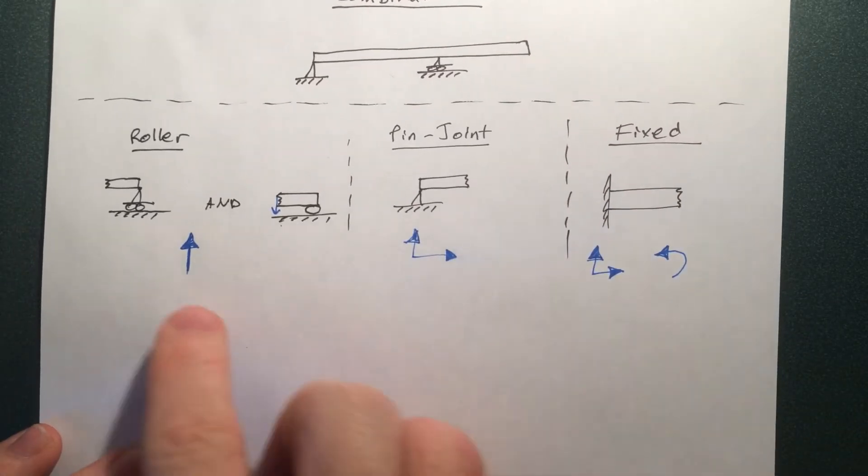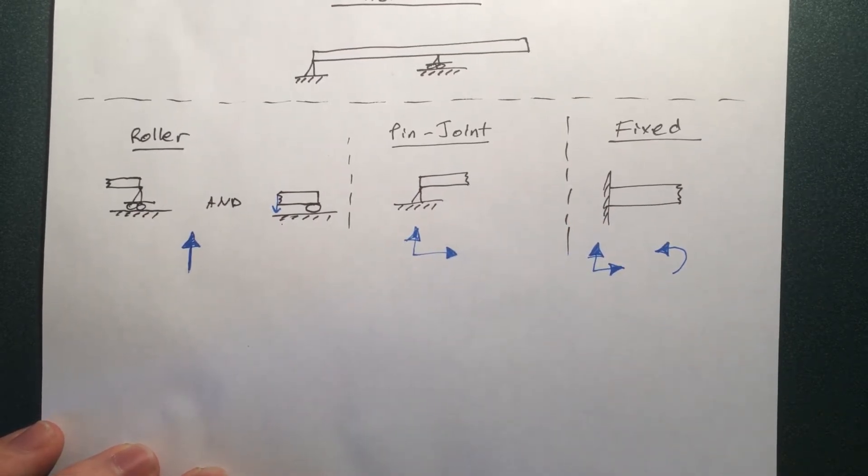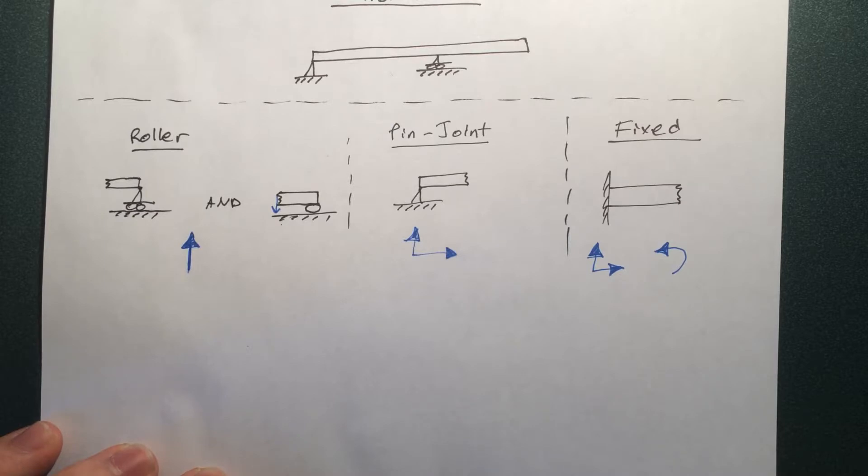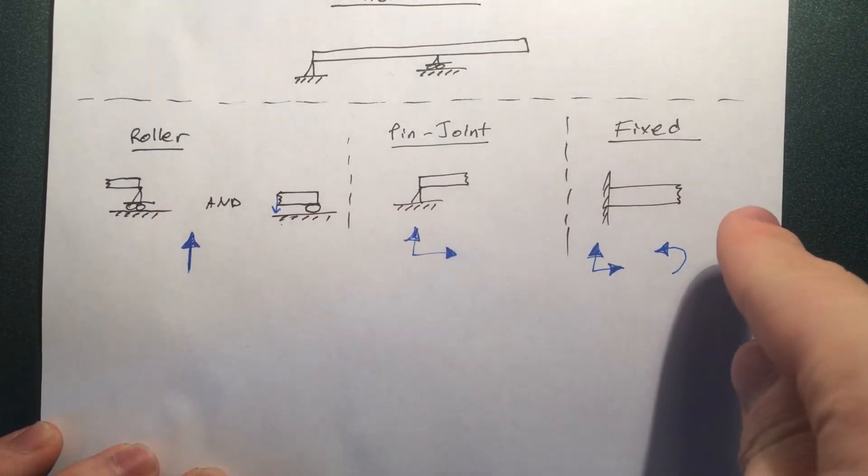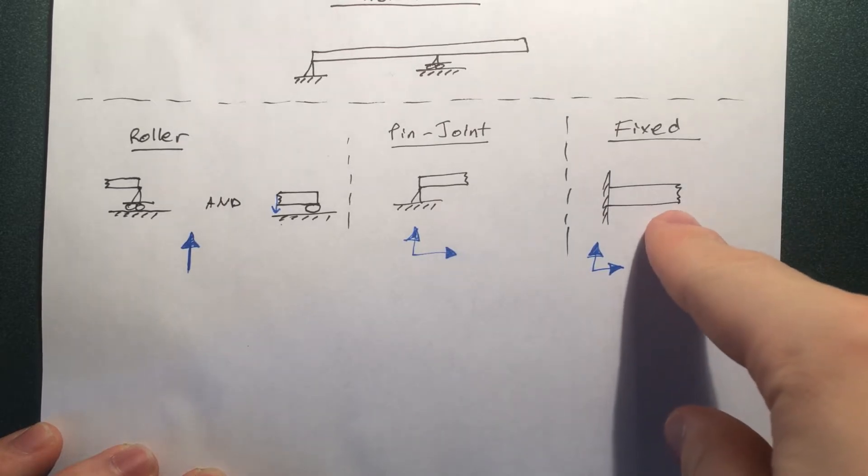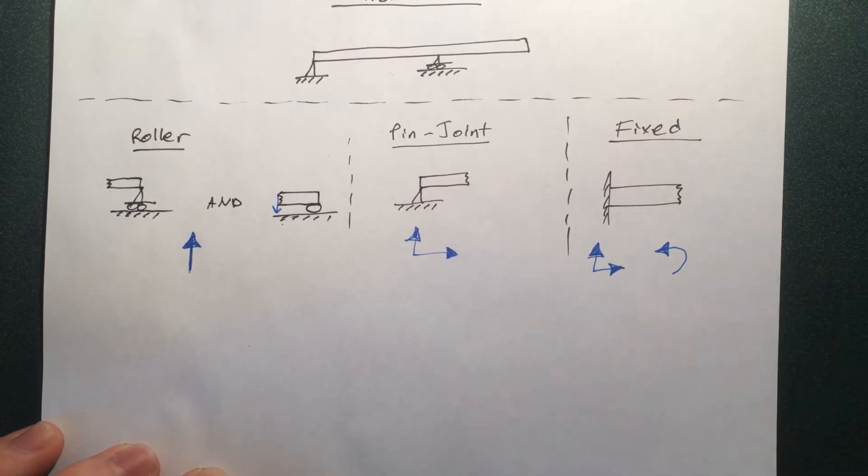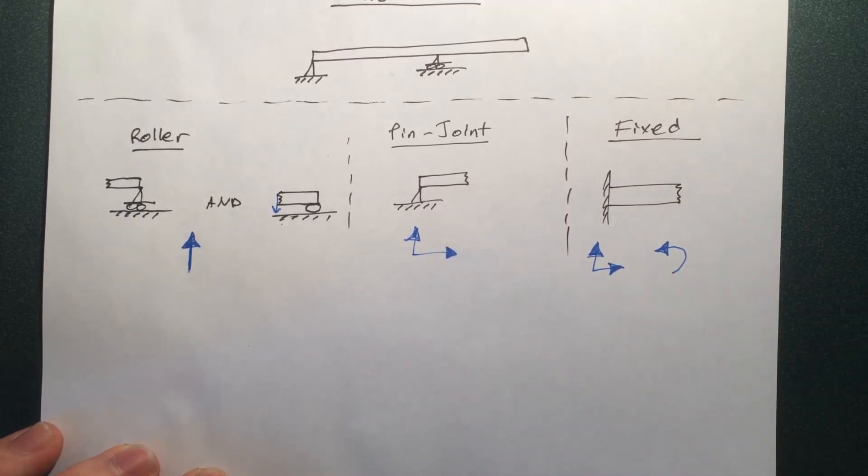So these are the three types of supports. I've kind of listed them in increasing order of resistive capabilities. And when you're analyzing a beam, you just got to realize that these types of supports can provide these sorts of reactions. So when you have a cantilever beam, you want to solve for some unknowns here, you need to know that there's three types of things going on.